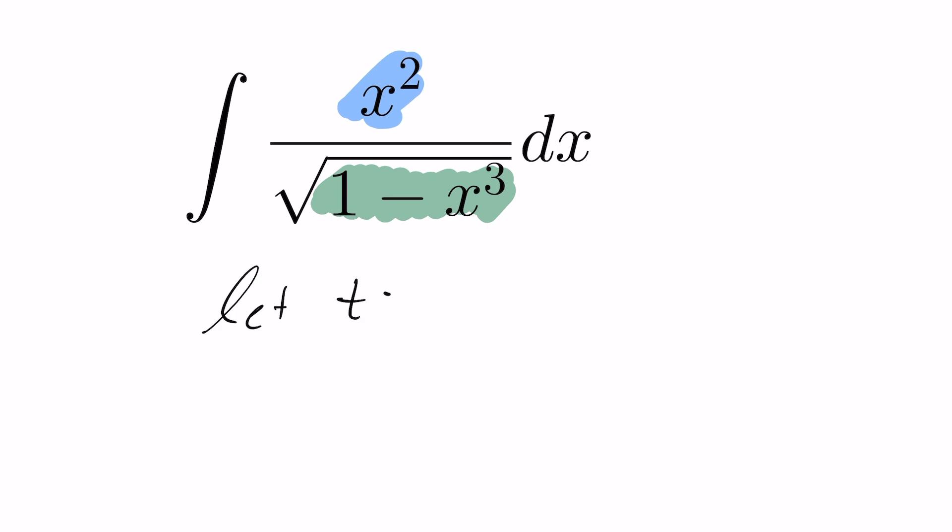So I'm going to go ahead, I'm going to let t equal 1 minus x cubed, and therefore dt is going to equal minus 3x squared dx. From that we have minus 1 third dt is going to be equal to x squared dx.